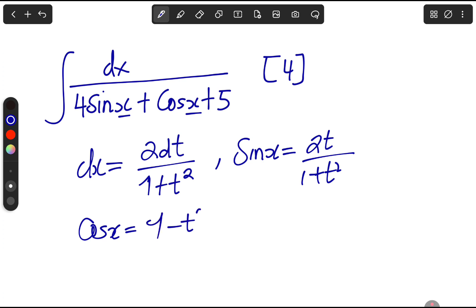For cosine, you write this. For cosine, you put this. So these are what we need to keep in mind as we are using t-substitution or the magic substitution.